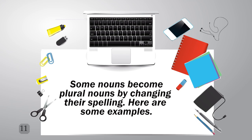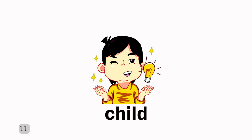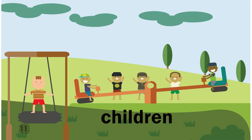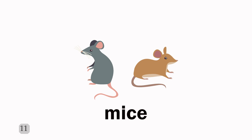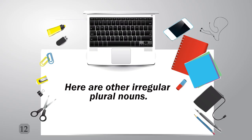Some nouns become plural nouns by changing their spelling. Here are some examples: Child → Children. Mouse → Mice. Tooth → Teeth. Here are other irregular plural nouns.